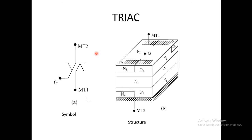SCR flows current only from anode to cathode. So to control the AC power, there is a limit to SCR. So that limitation is overcome in case of TRIAC.